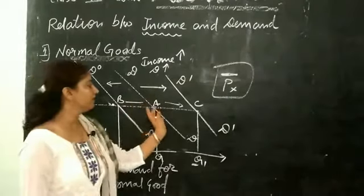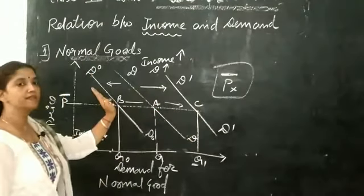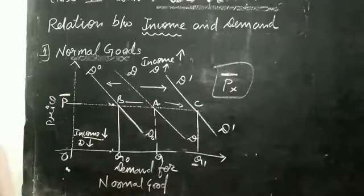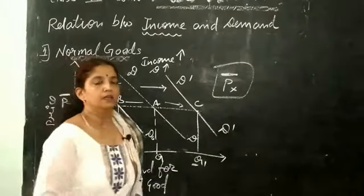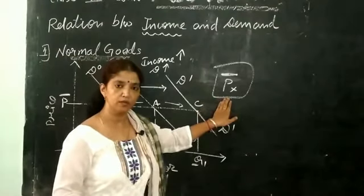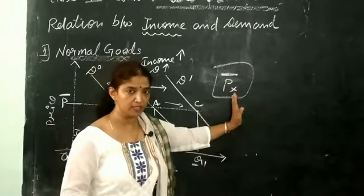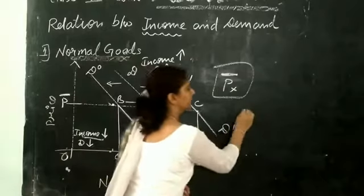The key assumption is that the price of the commodity remains constant and the only variable is income. With an increase in income, the demand curve shifts outward, and with a decrease in income, the demand curve shifts towards the origin.